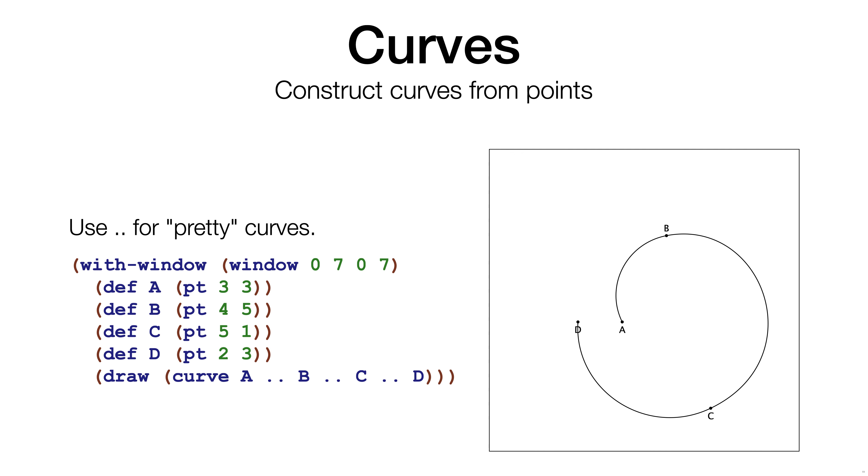This example uses the same four points as before. This time, the points are connected using dot-dot. The dot-dot means that the curve should find a pretty curve that goes through the points.